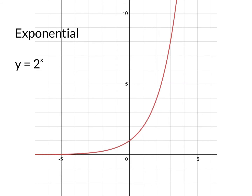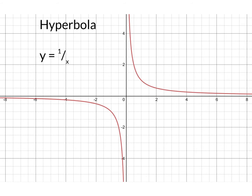The next one was the exponential, which was y equals 2 to the x — it could be 3 to the x, 4 to the x, but we focused on 2 to the x — passing through 1 on the y-axis. We talked about the x-axis being an asymptote, because that's what it approaches but doesn't actually touch. The third one was the hyperbola, that's 1 over x. Our x and y-axes are our asymptotes, so the graph on both sides approaches the x-axis and also approaches the y-axis.